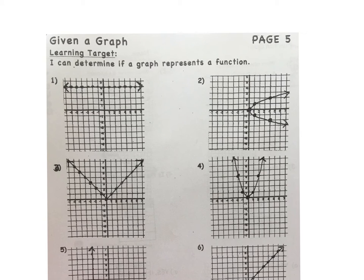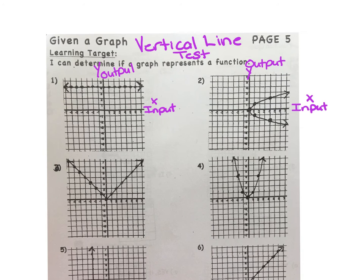Welcome to page 5 of Excel packet number 6. On this page we will run the vertical line test to determine if a relation is a function. Our I can statement says I can determine if a graph represents a function.